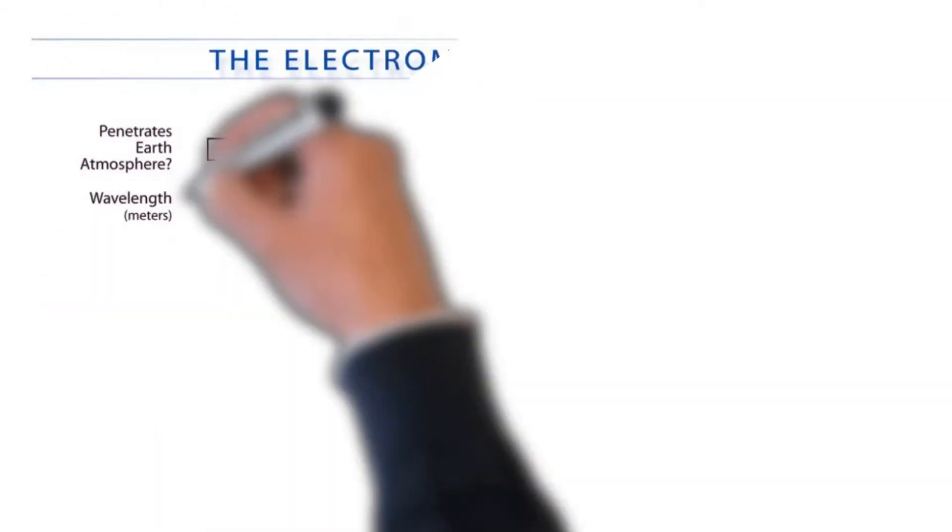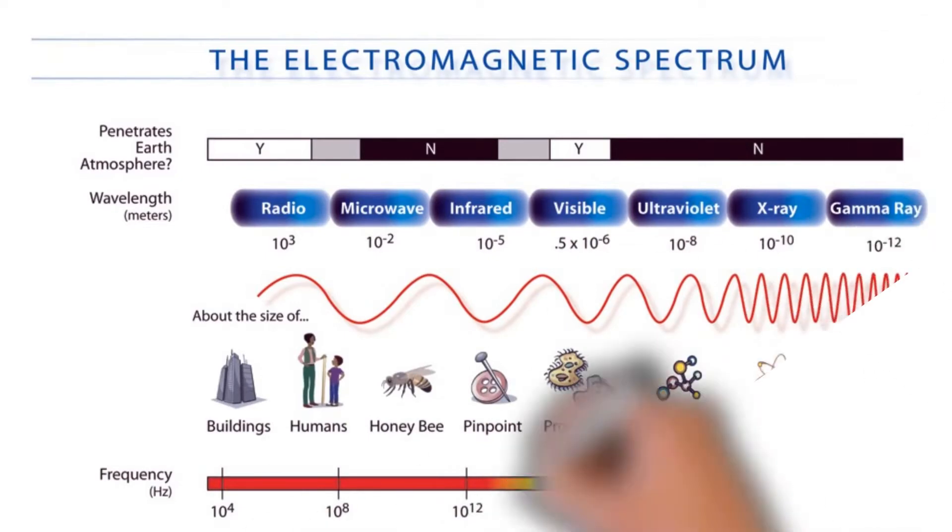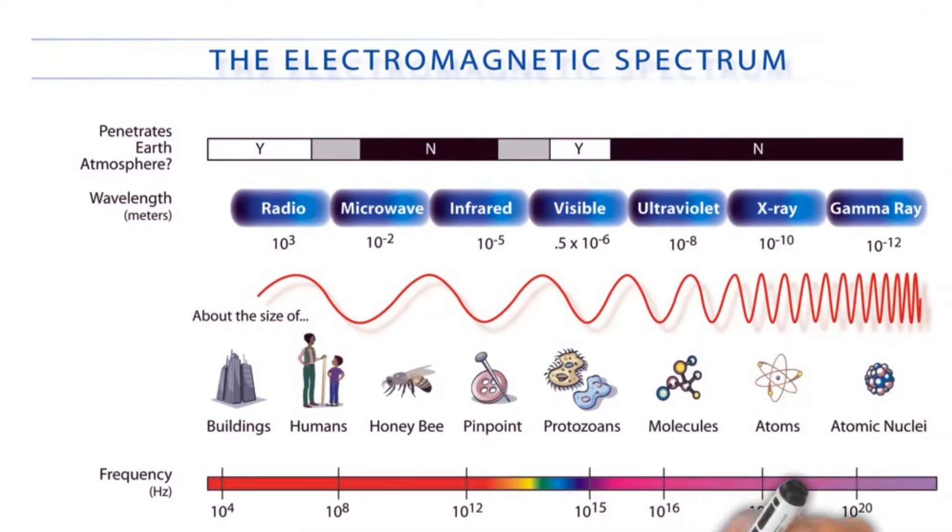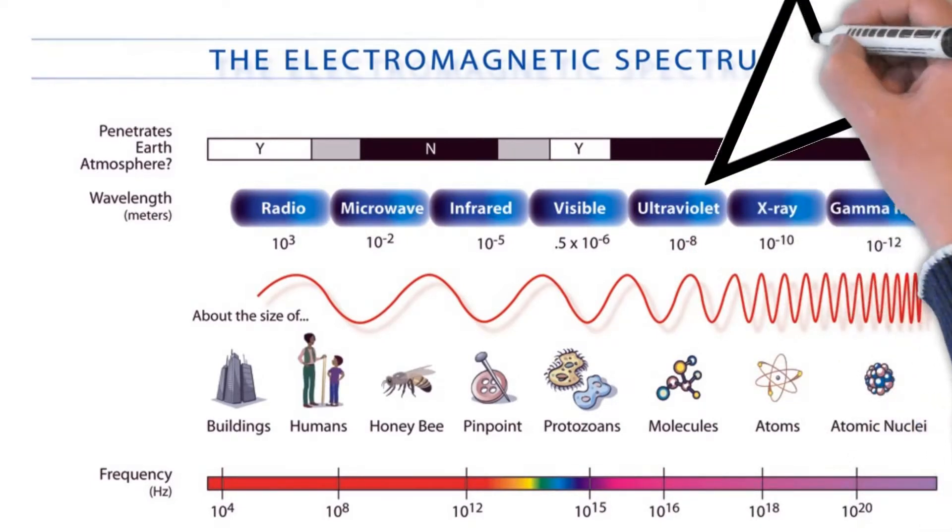Ultraviolet is a form of electromagnetic radiation with wavelengths shorter than that of visible light but longer than x-rays. UV radiation is present in sunlight and constitutes about 10% of the total electromagnetic radiation output from the sun.